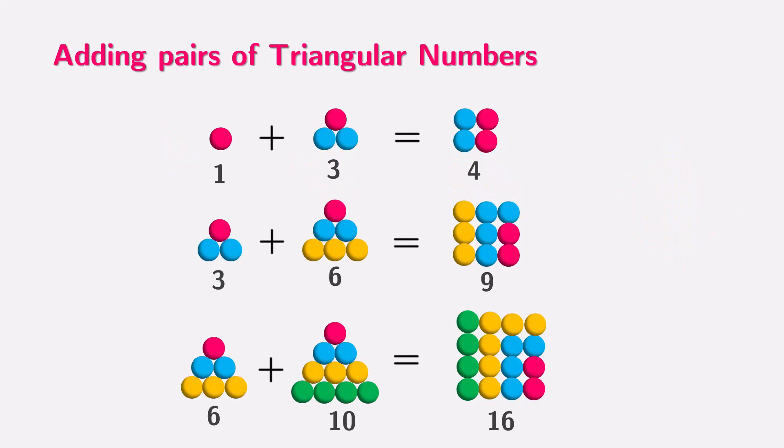When we add any pair of triangular numbers, like 1 plus 3, 3 plus 6, 6 plus 10, and so on, they fit together to make square numbers. For example, 1 plus 3 equals 4, which is 2 square. 3 plus 6 equals 9, which is 3 square. 6 plus 10 equals 16, which is 4 square, and so on.